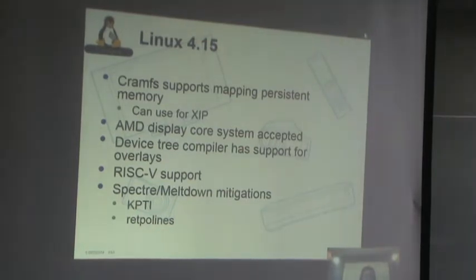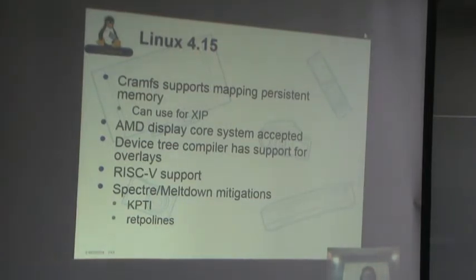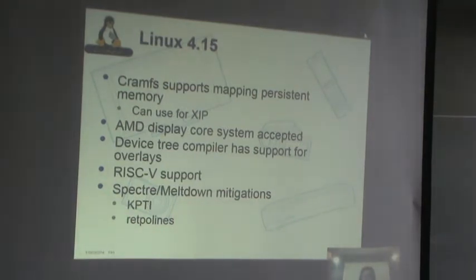Device Tree compiler added support for overlays. There was RISC-V support added to the kernel. And then the big news in 4.15 — this was in January when 4.15 came out — we had the Spectre and Meltdown mitigations with two really big features called KPTI (Kernel Page Table Isolation) and Retpolines, which are return trampolines. I talked a lot about those in my last talk at the Jamboree in March.